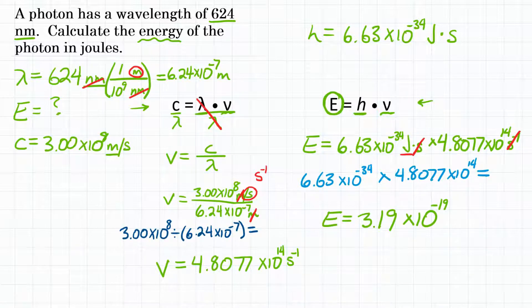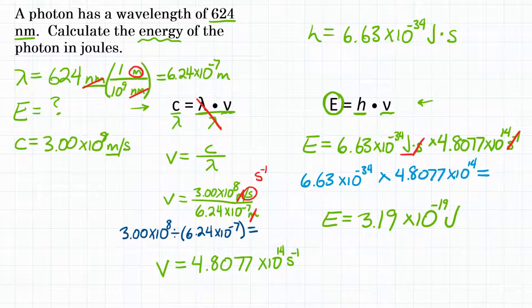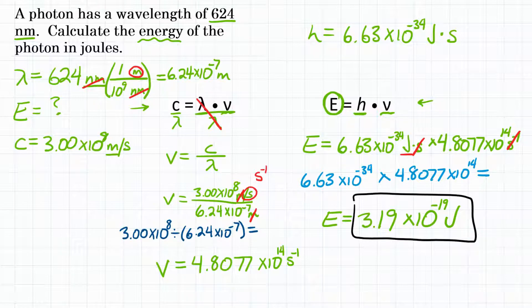So the final answer: for a photon with a wavelength of 624 nanometers, the energy is 3.19 times 10 to the negative 19th joules.